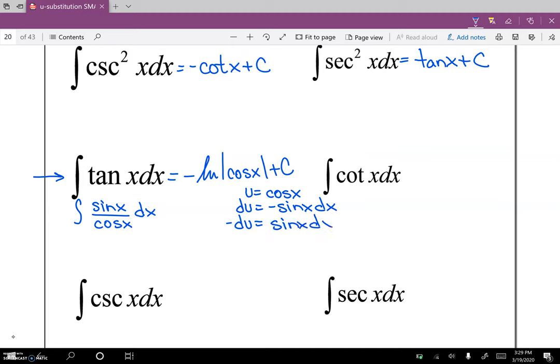So now we can rewrite this integral in terms of u. So we get u to the negative one, because cosine is in the denominator, and it's negative du. So when we take the integral, that would be negative the natural log of the absolute value of u plus c. Well, u is cosine of x. So check it out. This is where the rule comes from, on your sheet.